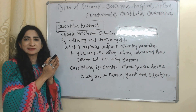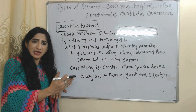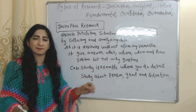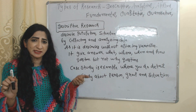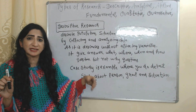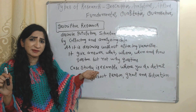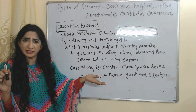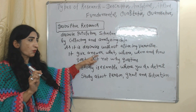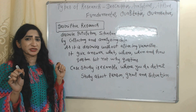First of all, we are going to talk about descriptive research. Descriptive research describes a population or situation by collecting and analyzing data. This type of research describes things without altering variables, and descriptive research gives answers to what, where, when, and how questions, but not the why question.